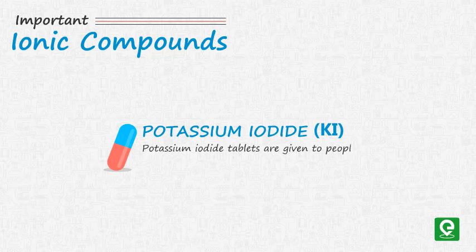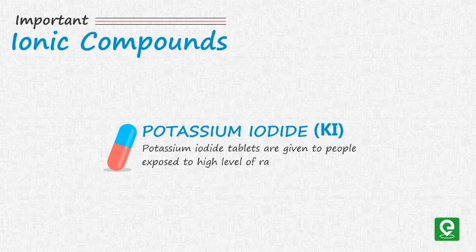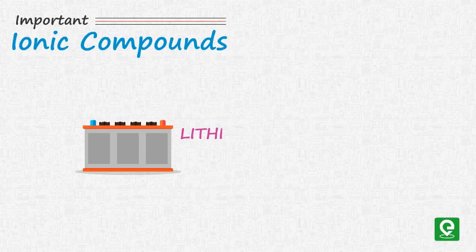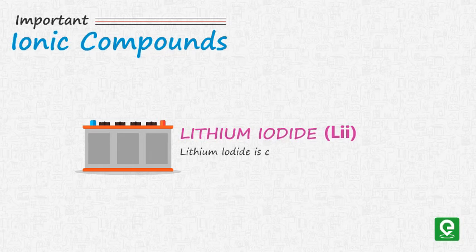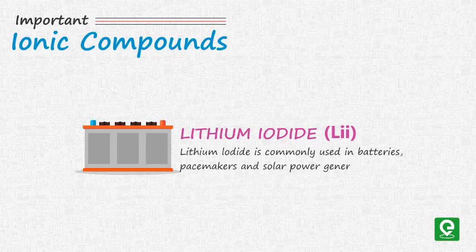Potassium iodide, KI. Potassium iodide tablets are given to people exposed to high levels of radiation. Lithium iodide, LiI. Lithium iodide is commonly used in batteries, pacemakers, and solar power generators.